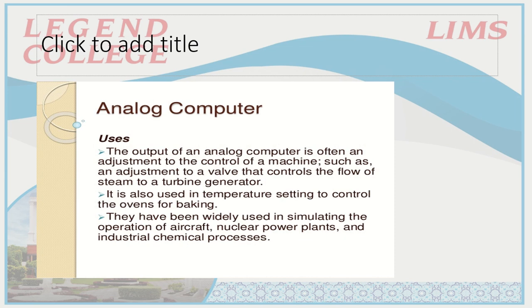The output of analog computers is often an adjustment to the control of a machine, such as an adjustment to the valve that controls the flow of steam to a turbine. Because it is a continuous signal, there is no discrete signal — the output will also be continuous. For example, a water flow, liquid flow, or a car engine all involve continuous control. In every place where we have a continuous signal, there will be an analog computer in use.